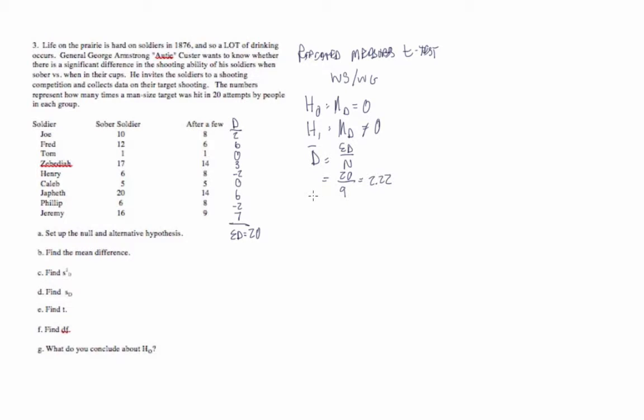Our next step is to find our variance term, which is s squared sub d, and that's equal to the sum of the difference scores squared minus the sum of the difference scores squared divided by n over n minus 1. So we need the sum of the difference scores squared. And so we'll set up a column here of difference scores squared. So 4, 36, 0, 9, 4, 0, 36, 4, and 49. Sum of our difference scores squared is equal to 142.